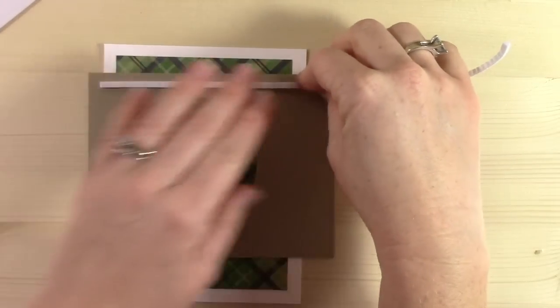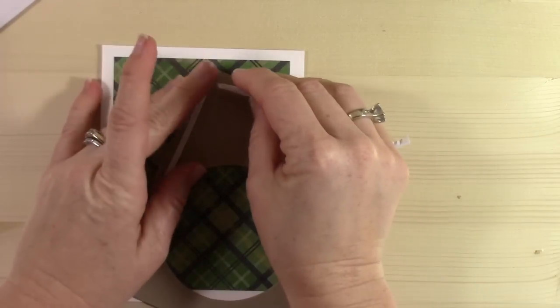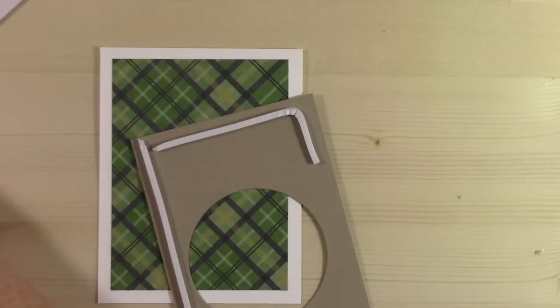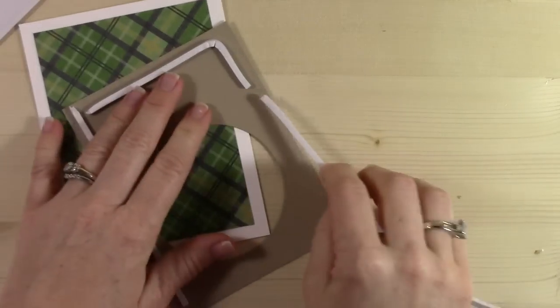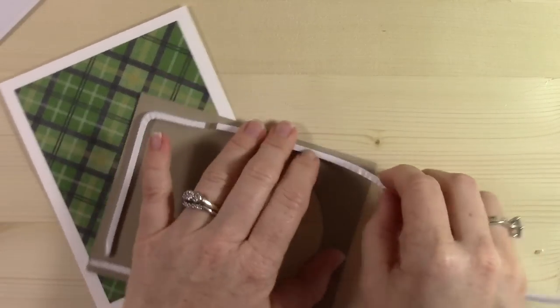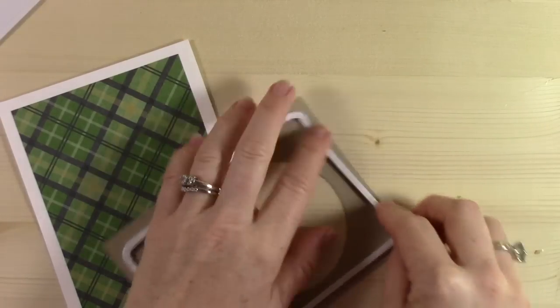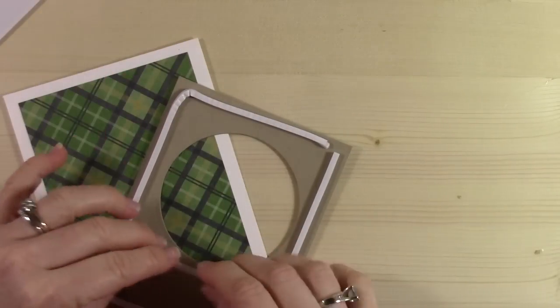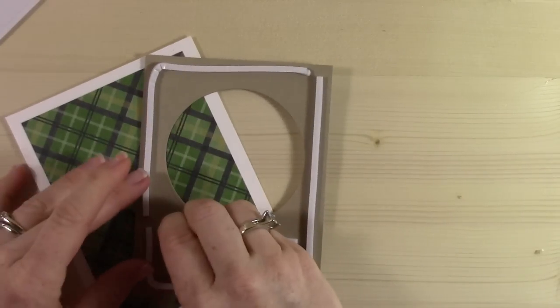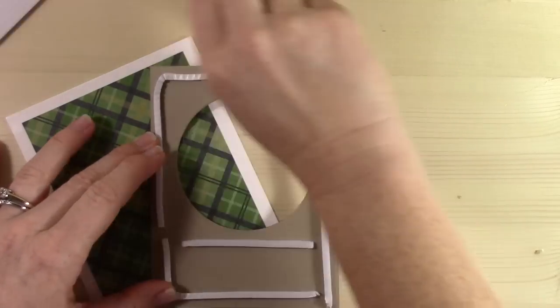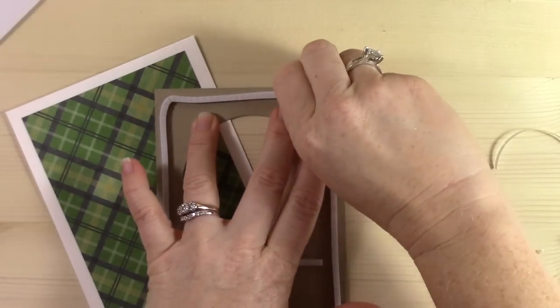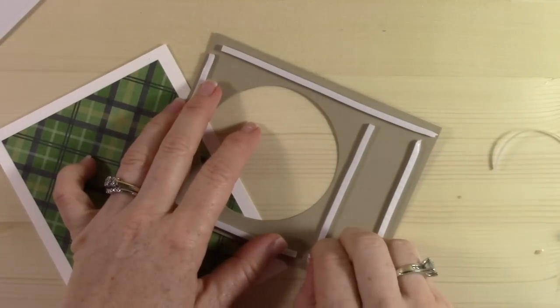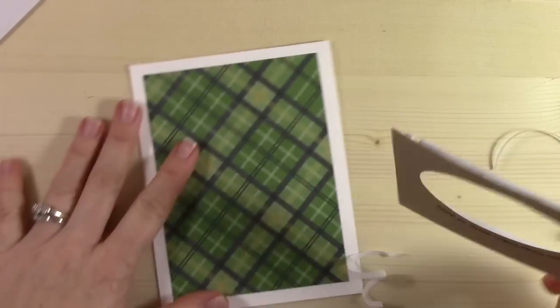On the back of this little cutout that I've created, I am going to lay down some foam tape. This is Stampin' Up's new foam strips that they came out with. I love them. They're really intended to make shaker cards, but you can use them obviously for whatever you want. I love them because the strip is so thin, very small, and it just makes for really awesome dimensionalizing—that's probably not a word.